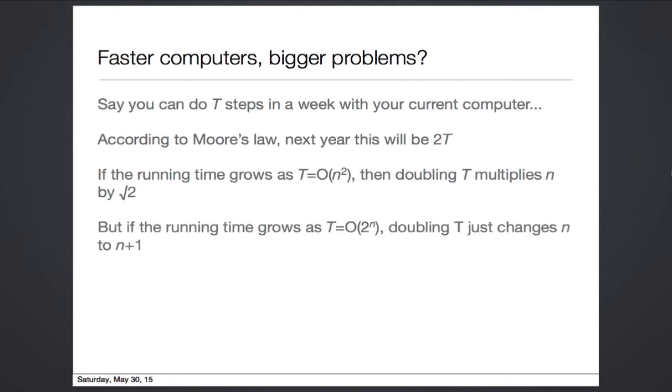But if the running time is exponential, a constant times 2 to the n, doubling t changes n to n plus 1. You can solve problems that are 1 bigger next year than you could this year.